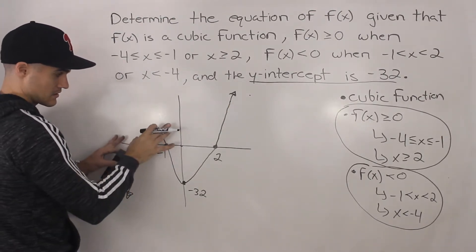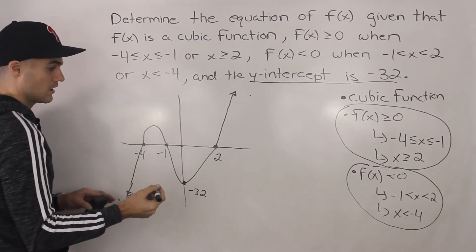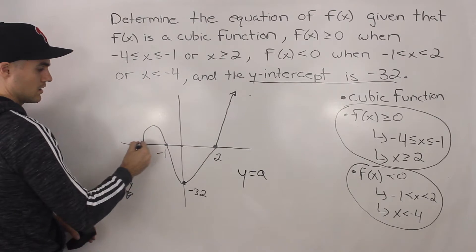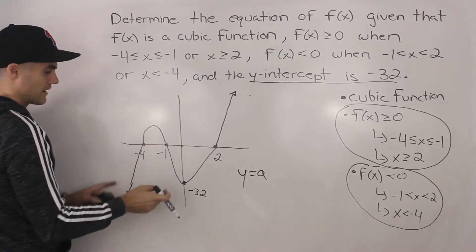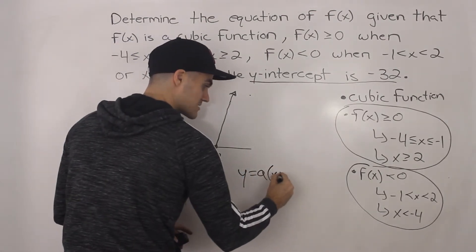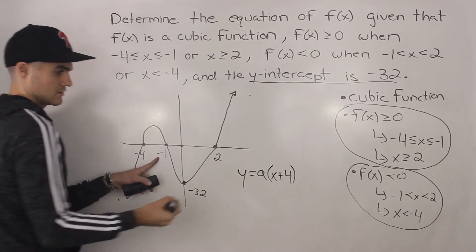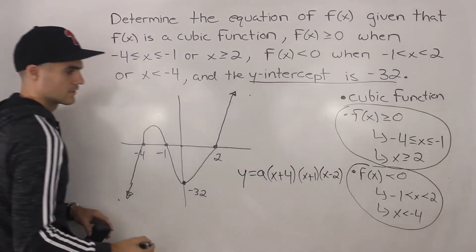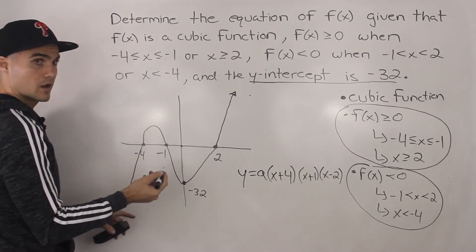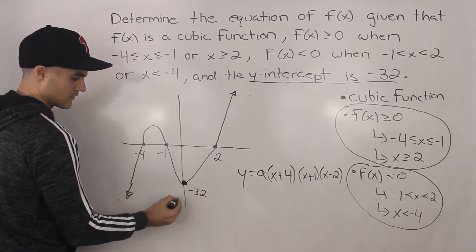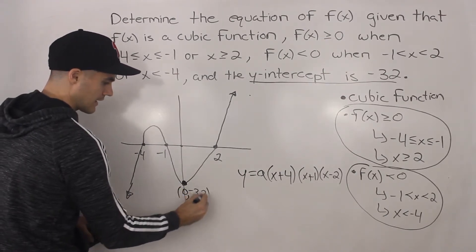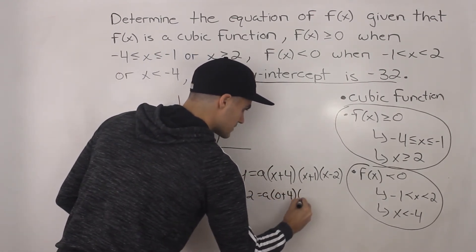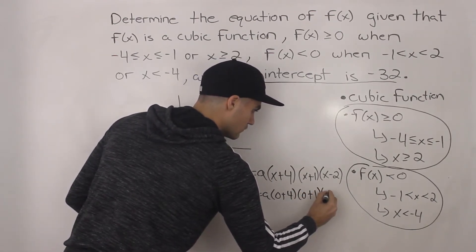Now we can take this graph and make a simple equation from it. We'll have y equals a times the factors. Always put an a-value in front. The x-intercepts give us our factors: x-intercept of negative 4 means a factor of x plus 4, negative 1 gives x plus 1, and 2 gives x minus 2. To solve for a, we pick a point other than the x-intercepts — and we're given that point: it's (0, negative 32). So we plug in negative 32 for y and 0 for all the x's.